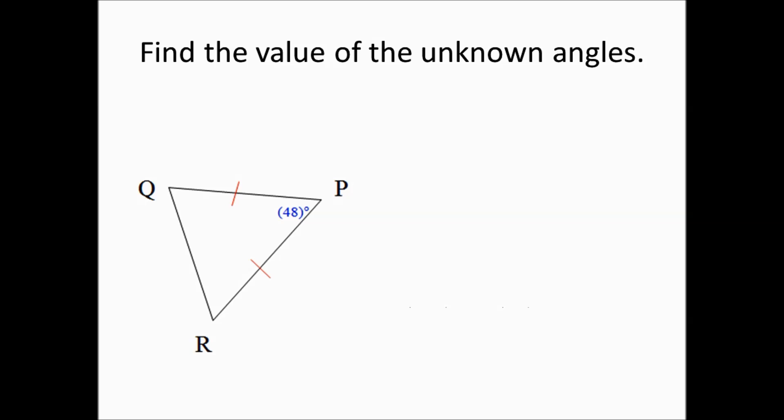Here's another example of the base angles theorem. Again, two sides are congruent to each other, therefore the angles opposite those sides are also congruent. The measurement of angle Q and angle R will each be represented by X. Due to the triangle sum theorem, 180 equals 48 plus X plus X.